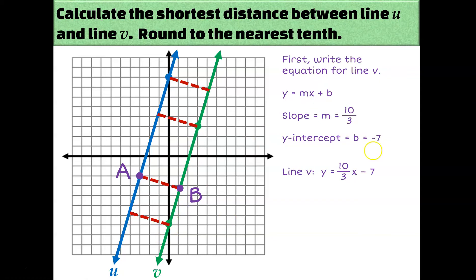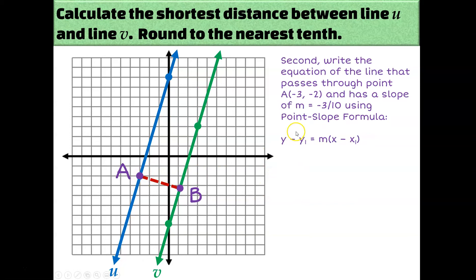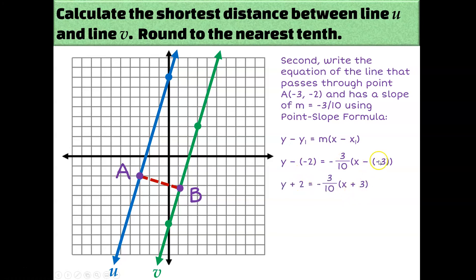Now I need the equation for line AB so that I can set it equal to this one. All I really know about line AB is that it passes through point A, which is (−3, −2), and it has a slope of negative 3 tenths. That's plenty of information for slope-intercept form, but we'll have to start with point-slope form. Point-slope form is what you use when you have a point and a slope. So I'll plug in our point and our slope, simplify the minus-minuses to pluses, distribute, subtract, and I get a rather ugly equation — but that is the equation of line AB.